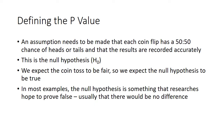The assumption needs to be made that each coin flip is going to have a 50-50 chance of landing on heads or tails, and we're going to record this accurately. This is the null hypothesis — there's going to be no difference, it should be 50-50, with nothing to skew the coin flip one direction versus another. We expect the coin toss to be fair, and so we expect this null hypothesis to be true. In most examples, the null hypothesis is something the researchers are trying to prove false, and usually this is going to be that there would be no difference.